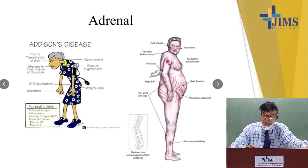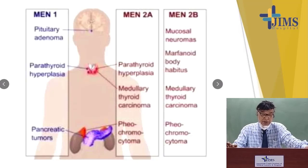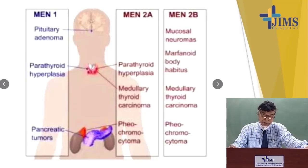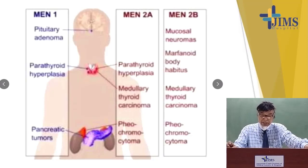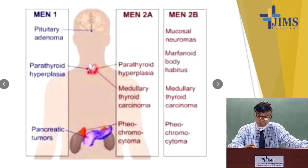Now, polyglandular syndromes — there are three types mainly. MEN 1 includes pituitary adenoma, parathyroid hyperplasia, and pancreatic tumors. MEN 2A includes parathyroid hyperplasia, medullary carcinoma of the thyroid, and pheochromocytoma. MEN 2B includes mucosal neuromas, Marfanoid body habitus, medullary thyroid carcinoma, and pheochromocytoma.